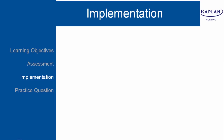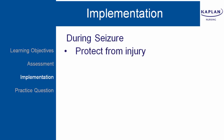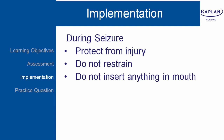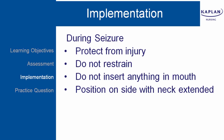Implementation — care of the client with seizures during the seizure. Protect from injury. Use padded side rails if that's part of your agency policy, or ease the client to the floor. Protect the head — perhaps putting a pillow underneath so they won't be banging it on the floor. Do not restrain. Do not insert anything in the mouth — no padded tongue blades, nothing in the mouth, as it can cause injury.